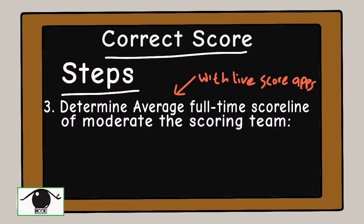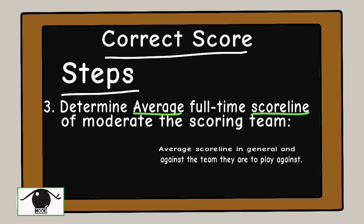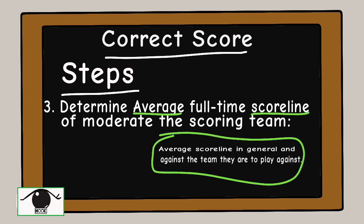The third step is to use your football info apps or websites to know the average full-time score of the moderate-scoring team you need to bet on, as well as their previous full-time results against the opponent in the game.